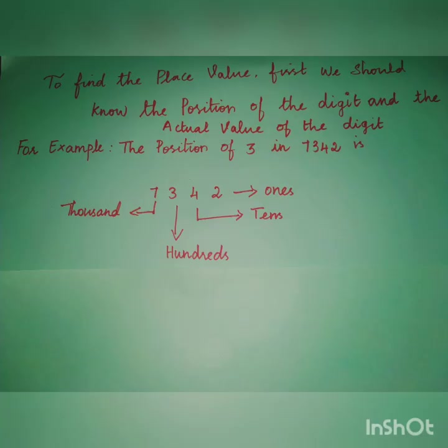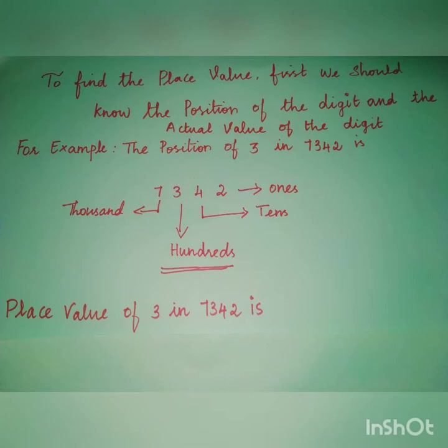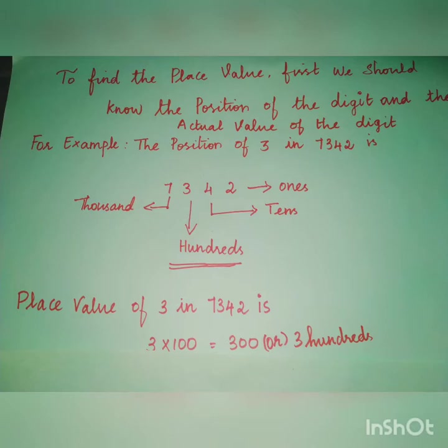For example, according to the place value chart, the position of 3 in 7342 is hundreds. Let's find the place value of 3 in 7342. As 3 is located in hundreds place, we multiply 3 by 100. So we get 300, and this is the place value of 3 in 7342.